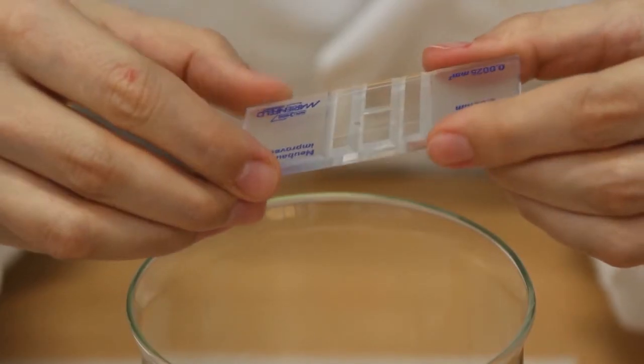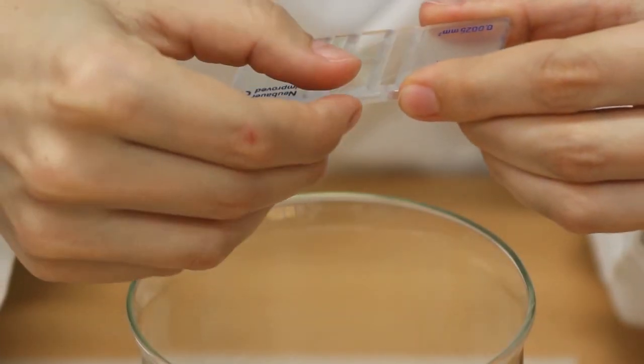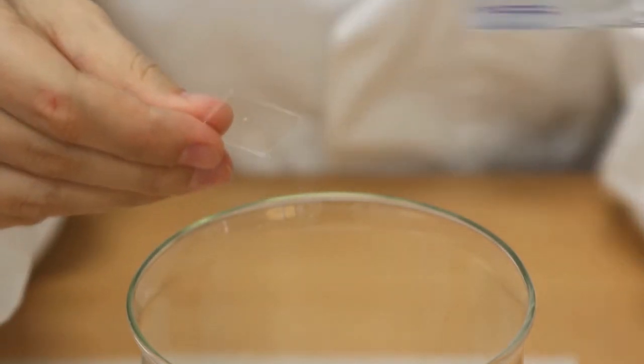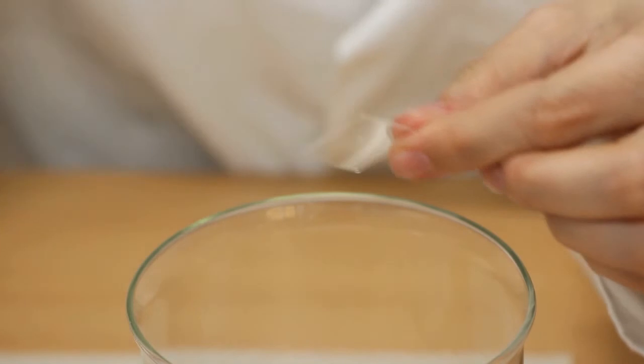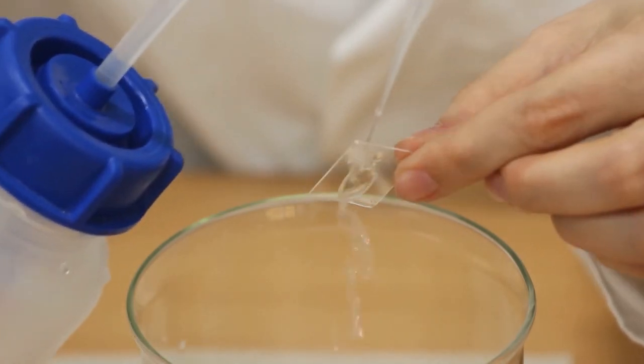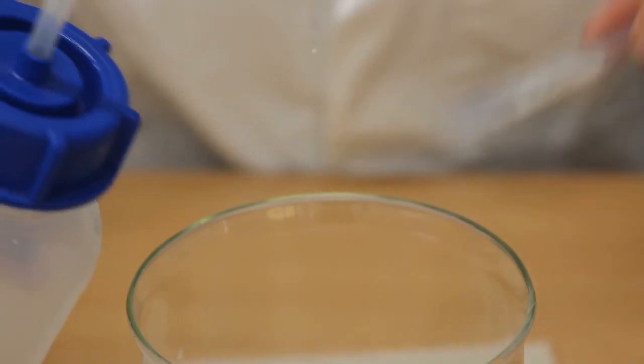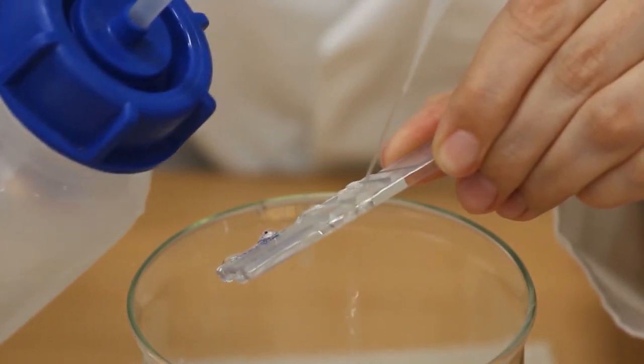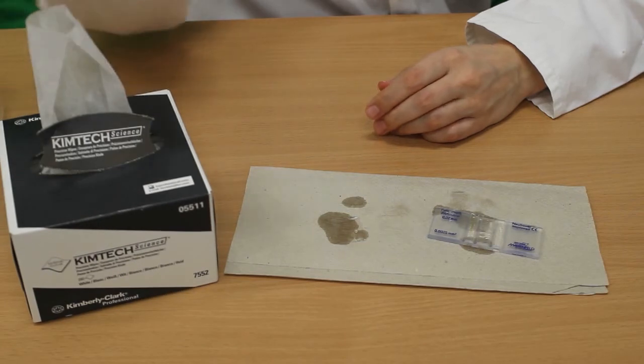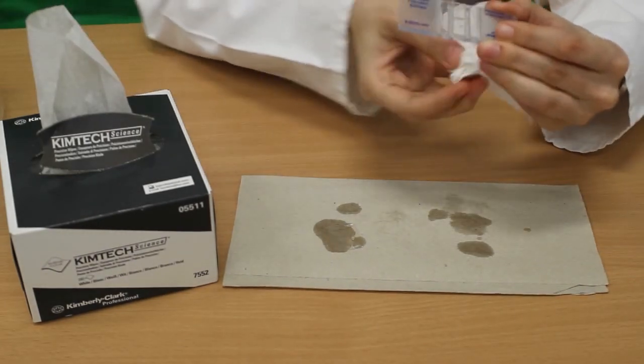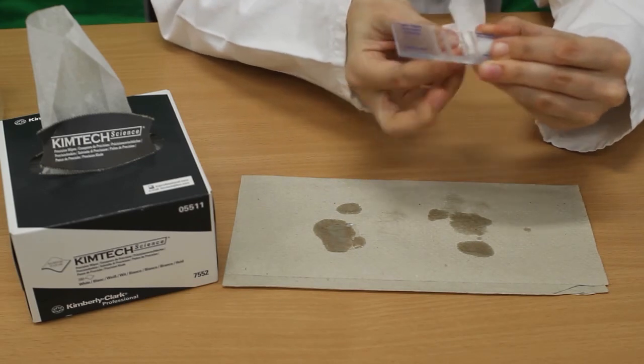When you are done with counting, remove the coverslip carefully from the side. Rinse the coverslip with water and the slide. Dry both with a piece of paper. Pay attention not to dry the middle structure, since this can destroy the counting grid.